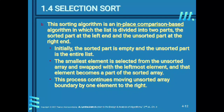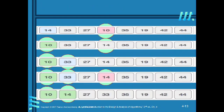Now let me explain with one example. This is an array. In the first step, we have to select the smallest element from the unsorted array. First, all elements are considered as the unsorted array — all eight elements are unsorted. So first we have to select the minimum element in the list. In the array, 10 is the minimum element.